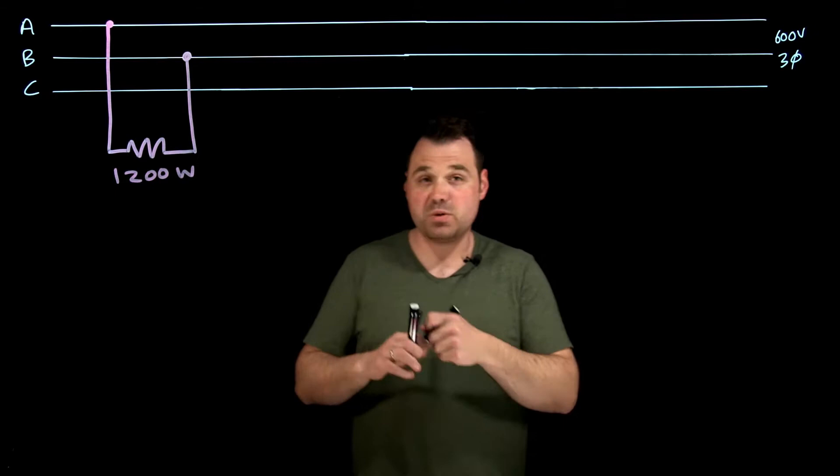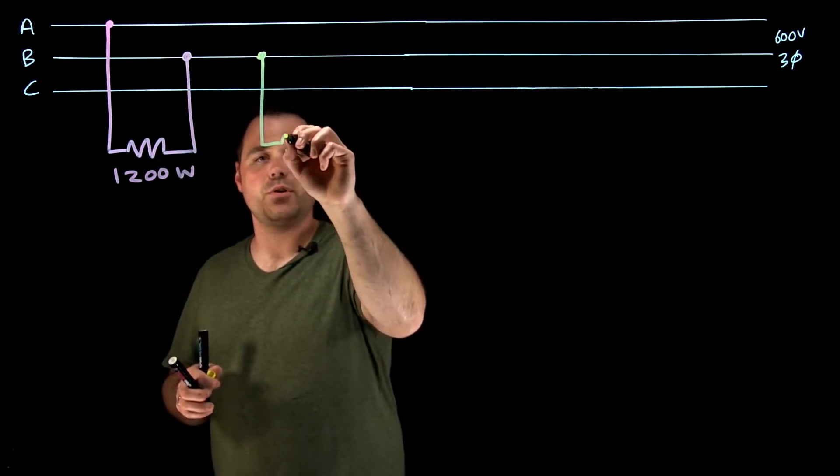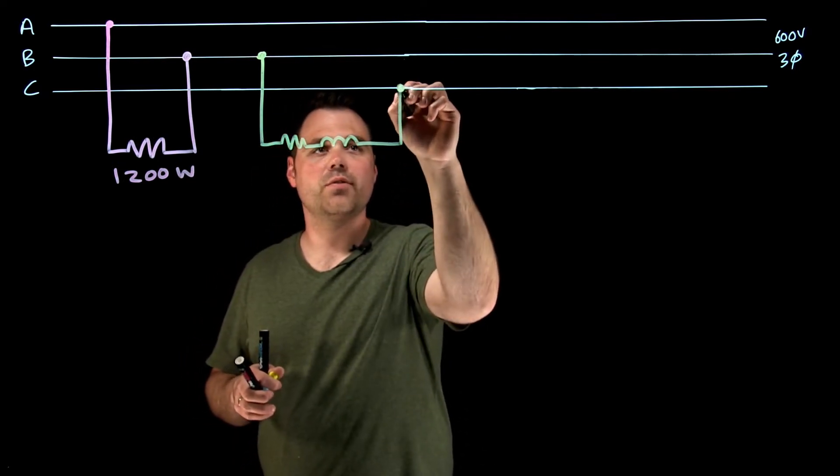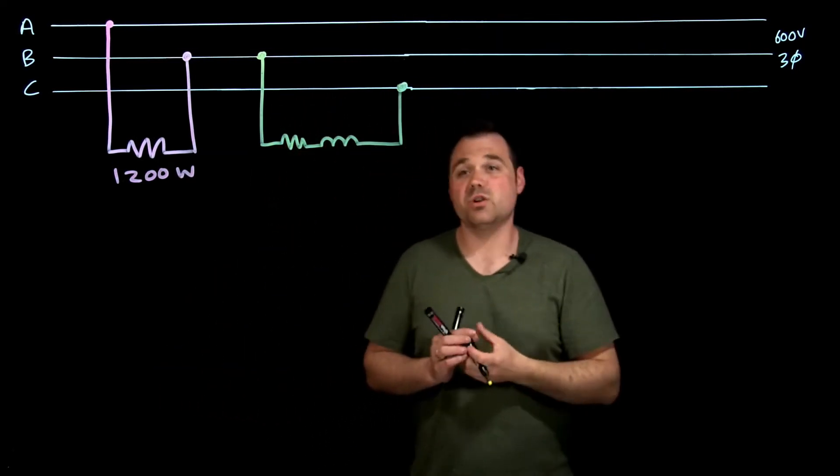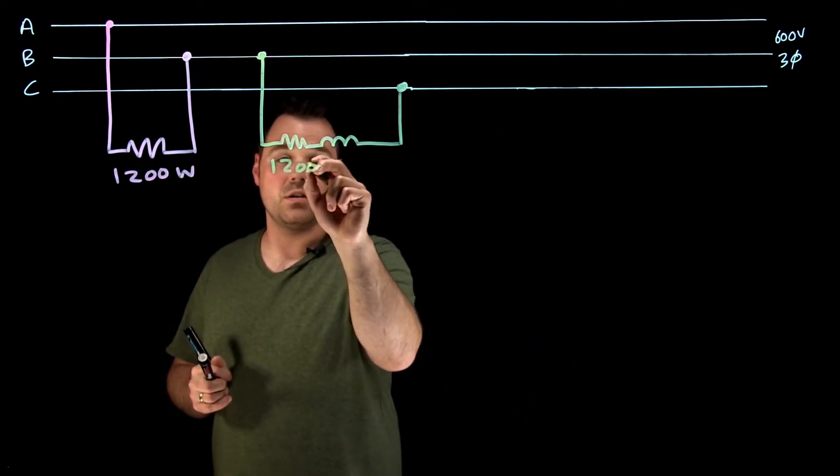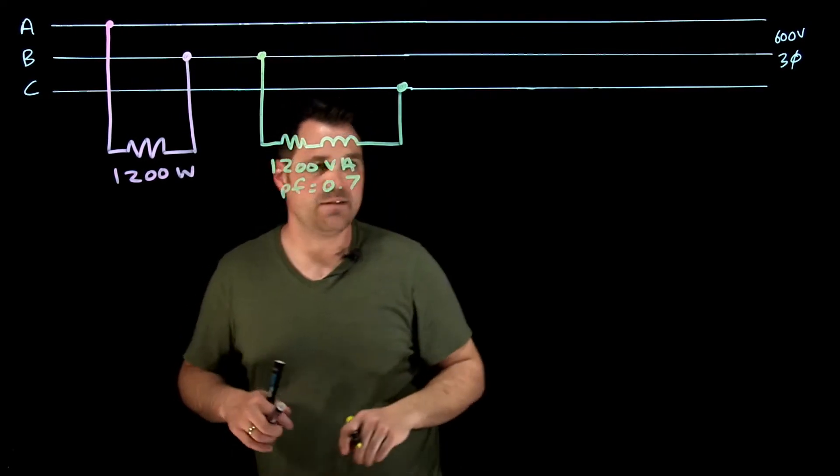Then in phase B, so going from B to C, I'm going to put a coil with a resistive value. That's from B to C. So a dirty coil or a real world coil, and let's say it's 1200 VA with a power factor of 0.7.